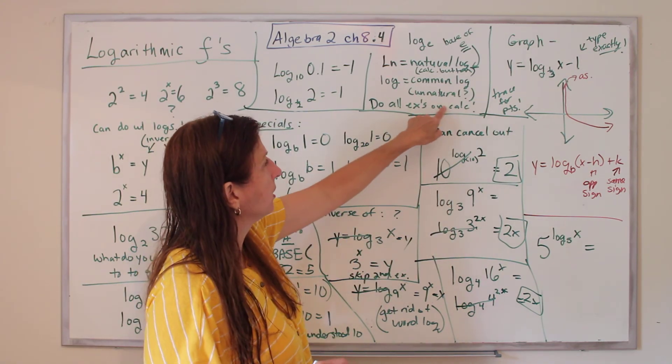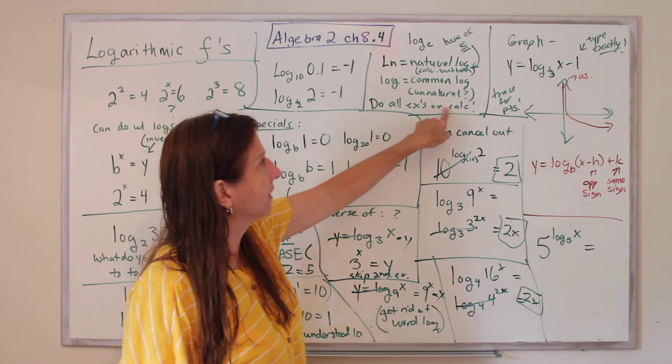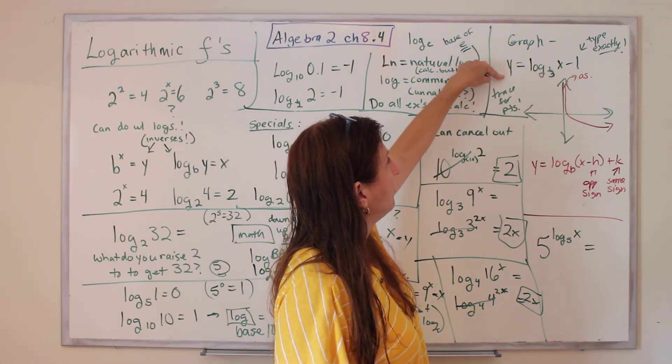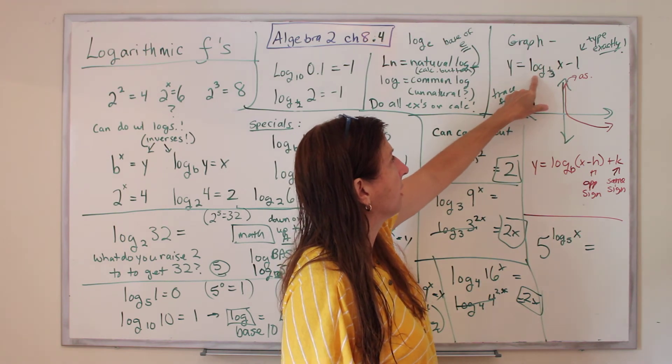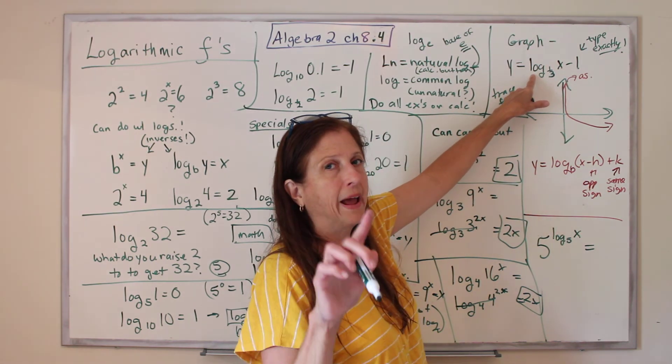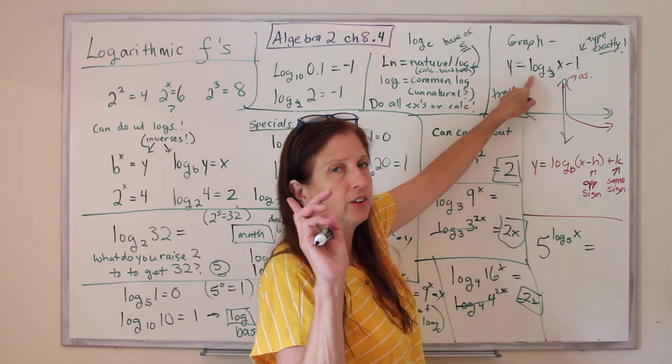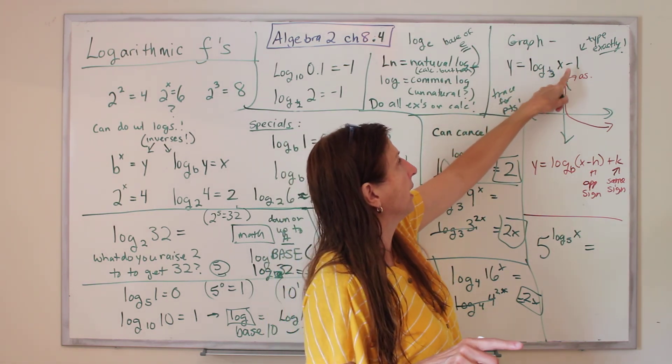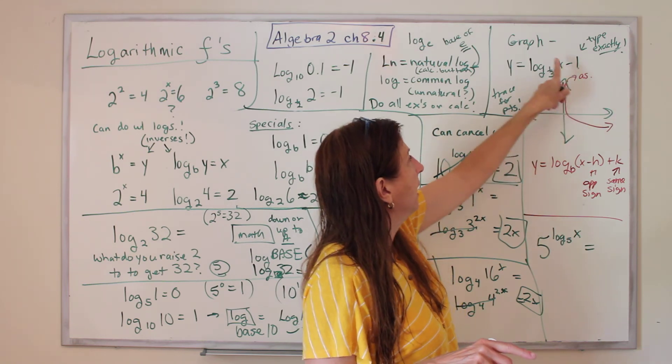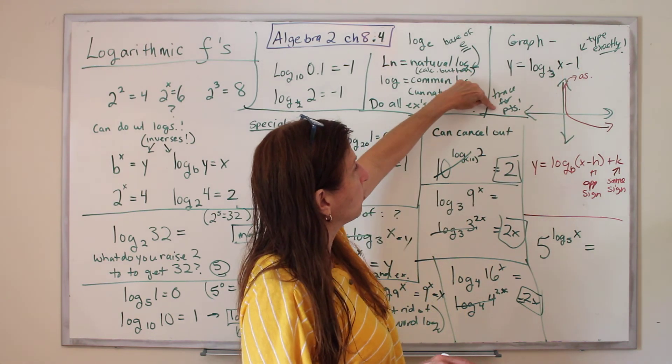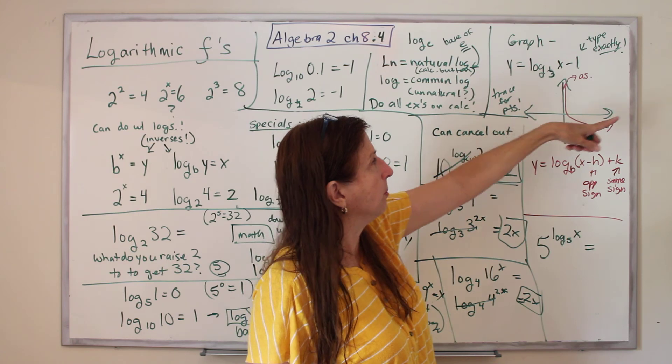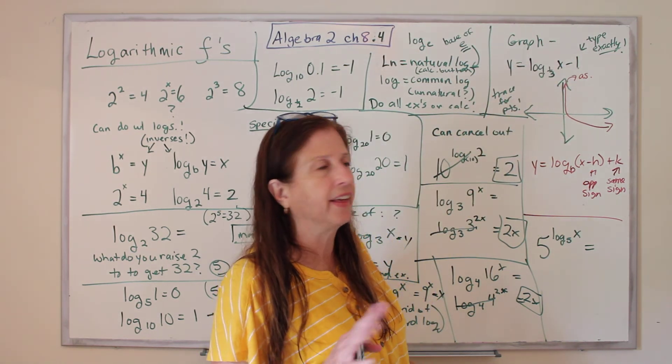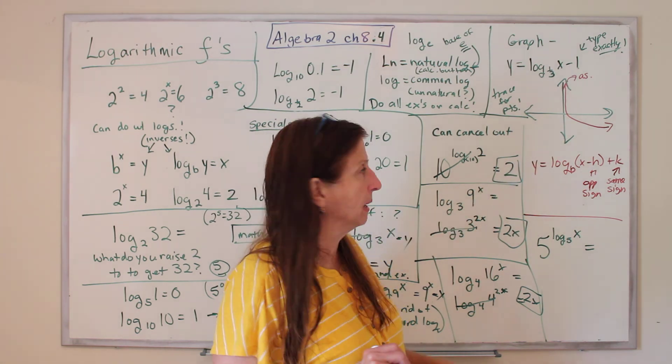So I want you to do every example, every one, on your calculator that you can. These are calculator problems, including the graph. So graph it. You just hit that log, and it'll pop up there. You go to math. You go to y equals. You go to math. You go to A, then you put in your base of 1 third, arrow over, and do x minus 1, and whoop, there it goes. Graph it, and then you trace for your points. And notice that it has the asymptotes, too. You can see that this is definitely related to the exponents. The graphs are the same, aren't they?